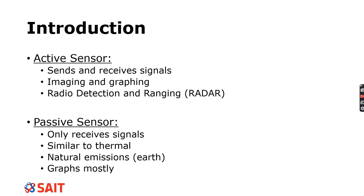So as an introduction, just kind of thinking back, we have two different kinds of major categories of sensors. One's an active, the other is a passive. So the active sensor itself, it sends and receives signals. So this is something that has to have some energy to produce a signal or energy to be able to send out and receive back. Active sensors are used often for imaging and graphing.